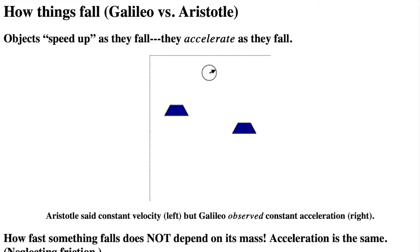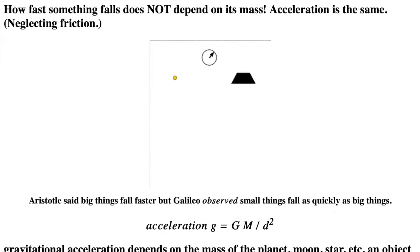What surprises people is shown in the second animation. Galileo found from his experiments that how fast something falls, how much it accelerates, does not depend on the mass of the falling object. The acceleration is the same for pure gravity in the absence of air friction. The small light ball and big massive anvil will hit the ground at the same time if dropped from the same height.